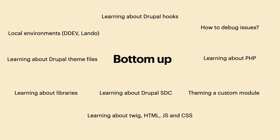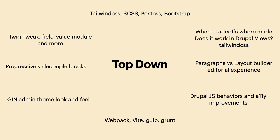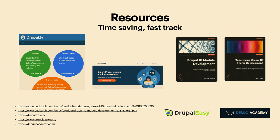Bottom-up is learning local development, Lando, PHP, Drupal hooks, and other fundamentals. Top-down is deciding you want Tailwind CSS, Gin admin theme, and Vite or Webpack on your project because that's the stack you're excited about. Leveraging your wants versus your actual starting experience and skill level can be key to having a successful theme without a lot of skeletons in the closet.